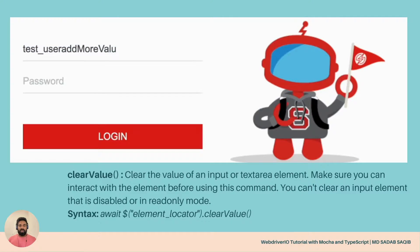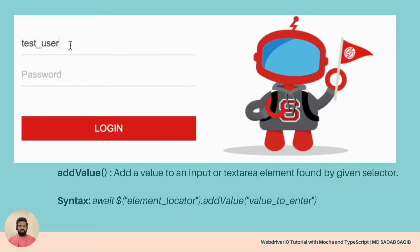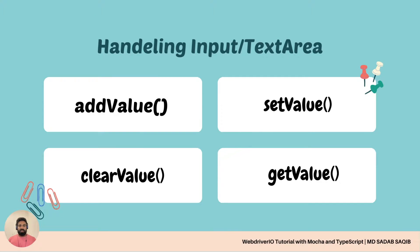The last one is clearValue. If you want to clear some text that's already there and then perform certain operations, you can use clearValue. Note that setValue is actually the combination of addValue and clearValue — mixing those two gives us setValue. So if you want to clear the element and add new content in one go, then use setValue.